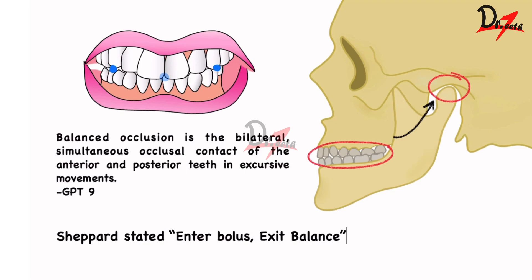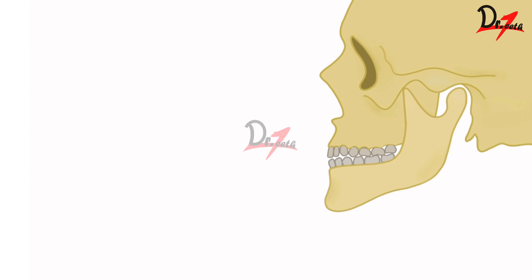Sheffert stated: 'enter bolus, exit balance.' Even if we give three-point contact in the denture, as soon as the patient eats, the balance is disturbed because there is a food bolus between the dentures, making the denture unstable. Sheffert questioned the point of balanced occlusion. However, chewing movement happens only for a certain duration — you're not going to eat the entire day — so for the maximum time, we still get the benefit of balanced occlusion.